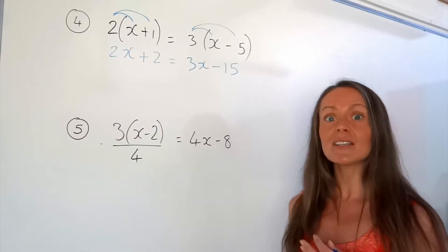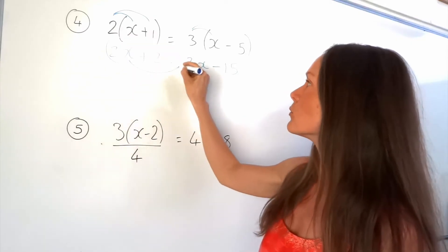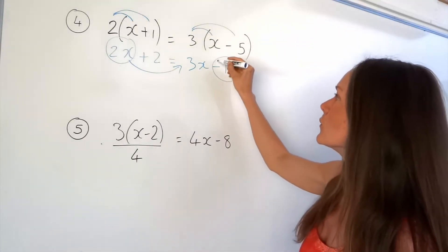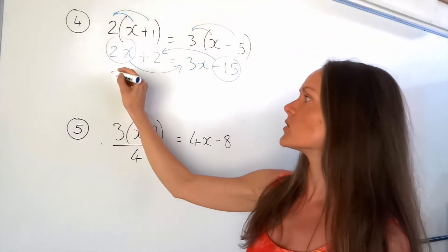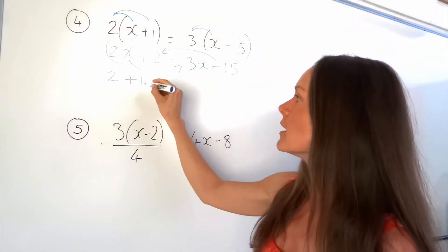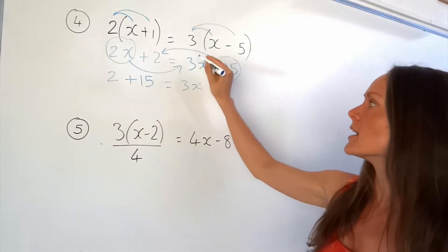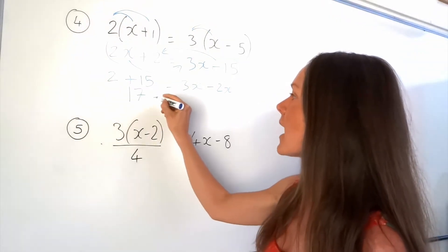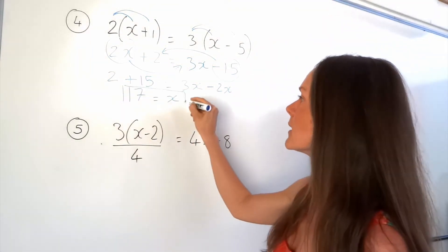Now it's just like the ones from earlier. We need to put x terms on one side, numbers on the other, and I'm going to try to move the smaller x term. So I'm going to move this 2x over to the right-hand side, which means I want numbers on the left. So I'm going to move that negative 15 over there. The positive 2 stays as positive 2, and the negative 15 turns into a plus 15. Then I've got the equal sign and the 3x which didn't move, but this positive 2x changes to a negative. So 2 plus 15 is 17, and on the right-hand side, 3x minus 2x leaves me with 1x. So we've solved that equation — x equals 17.